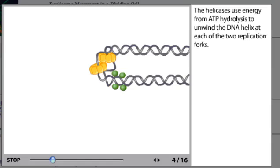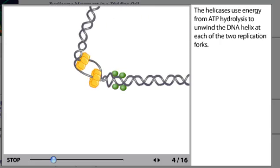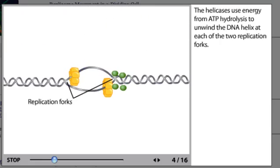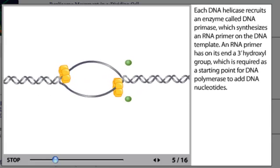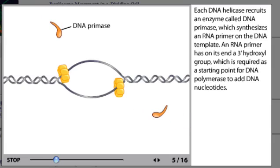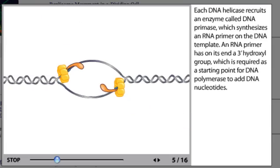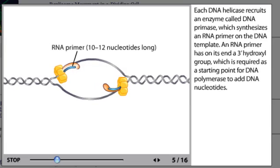The helicases use energy from ATP hydrolysis to unwind the DNA helix at each of the two replication forks. Each DNA helicase recruits an enzyme called DNA primase, which synthesizes an RNA primer on the DNA template. An RNA primer has on its end a 3 prime hydroxyl group, which is required as a starting point for DNA polymerase to add DNA nucleotides.